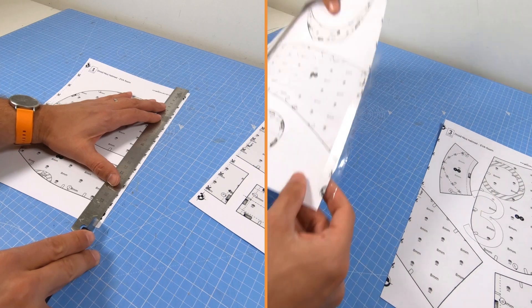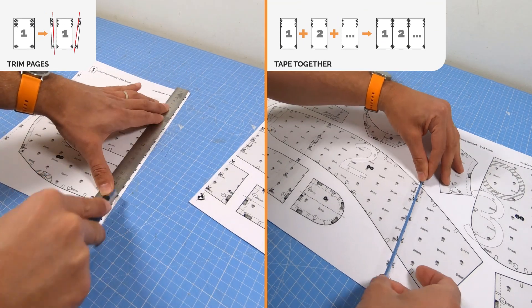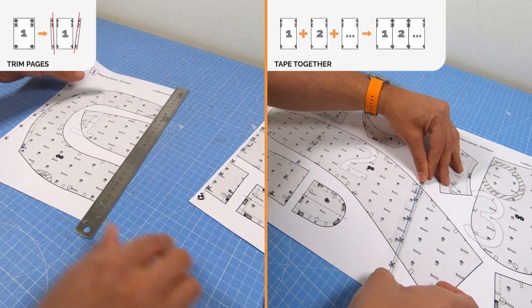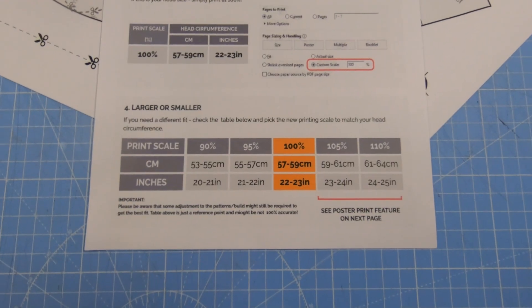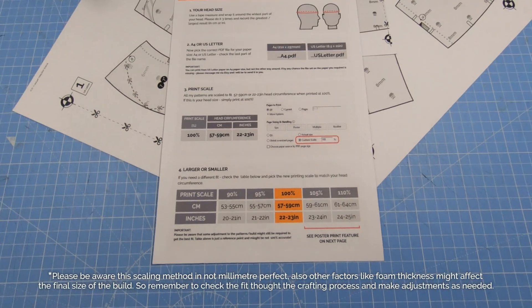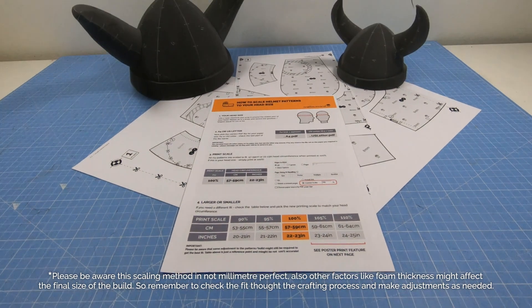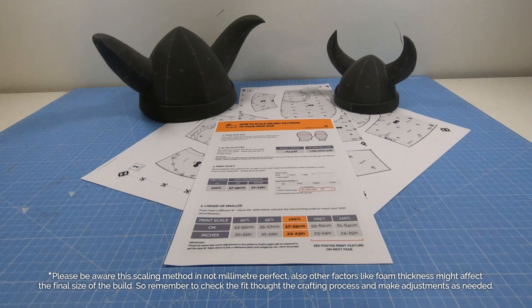Once printed, remember to trim all pages along the dash lines and tape them together before cutting individual patterns. With this handy size chart, you can easily adjust the printing scale to get the right fit. Hope this helps and happy crafting!